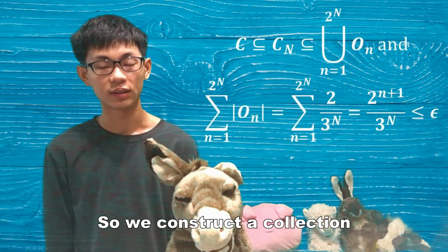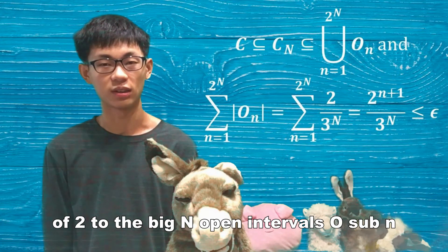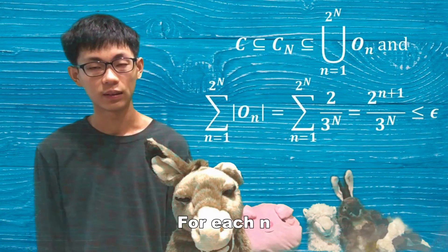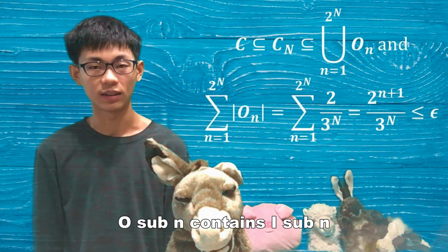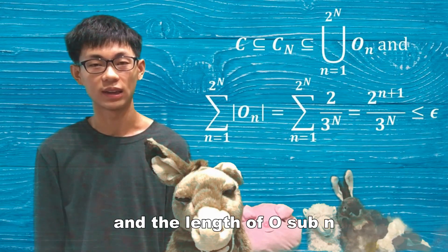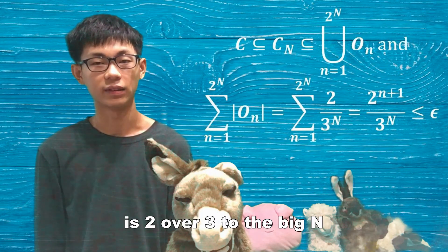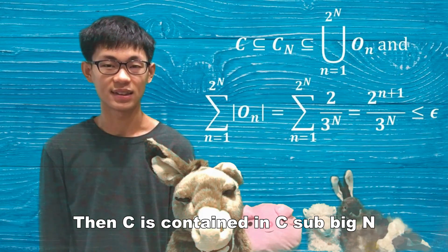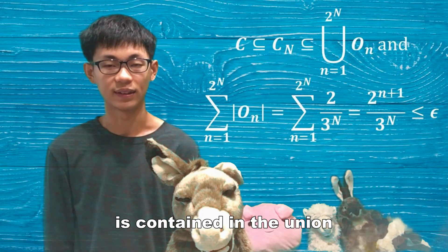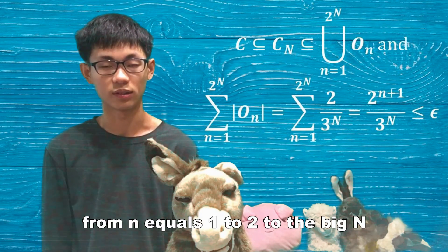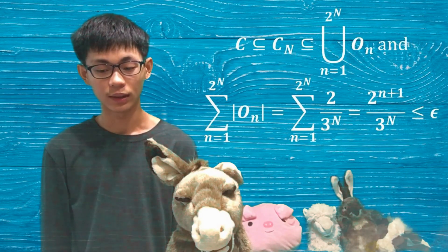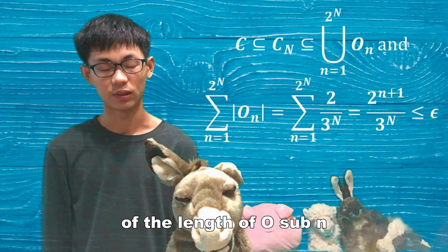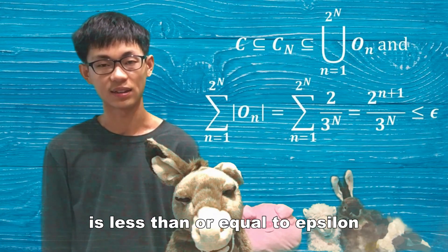We construct a collection of 2 to the big N open intervals O sub n. For each n, O sub n contains I sub n and the length of O sub n is 2 over 3 to the big N. Then C is contained in C sub big N, which is contained in the union from n equals 1 to 2 to the big N of O sub n. And the sum from n equals 1 to 2 to the big N of the length of O sub n is less than or equal to epsilon.